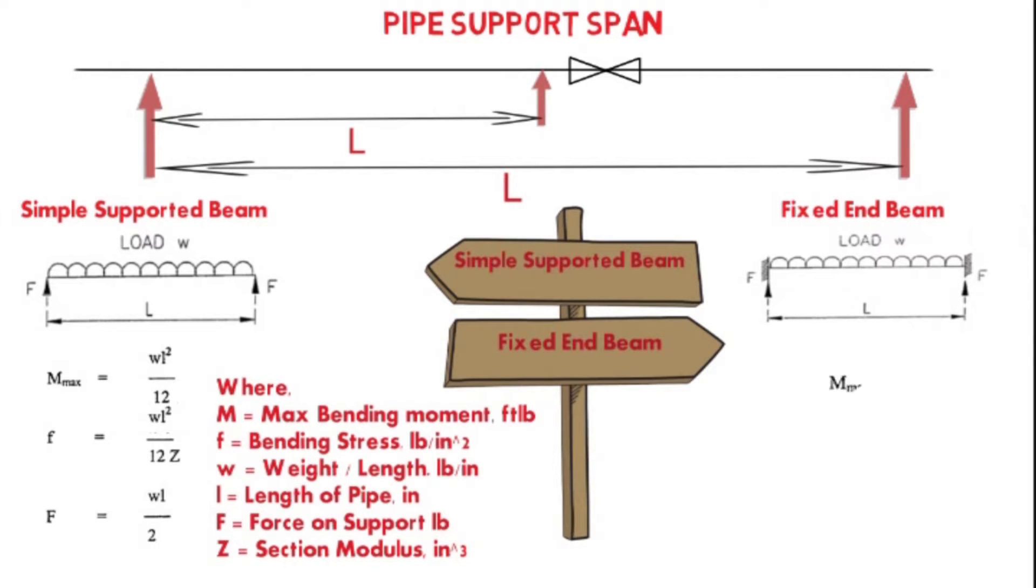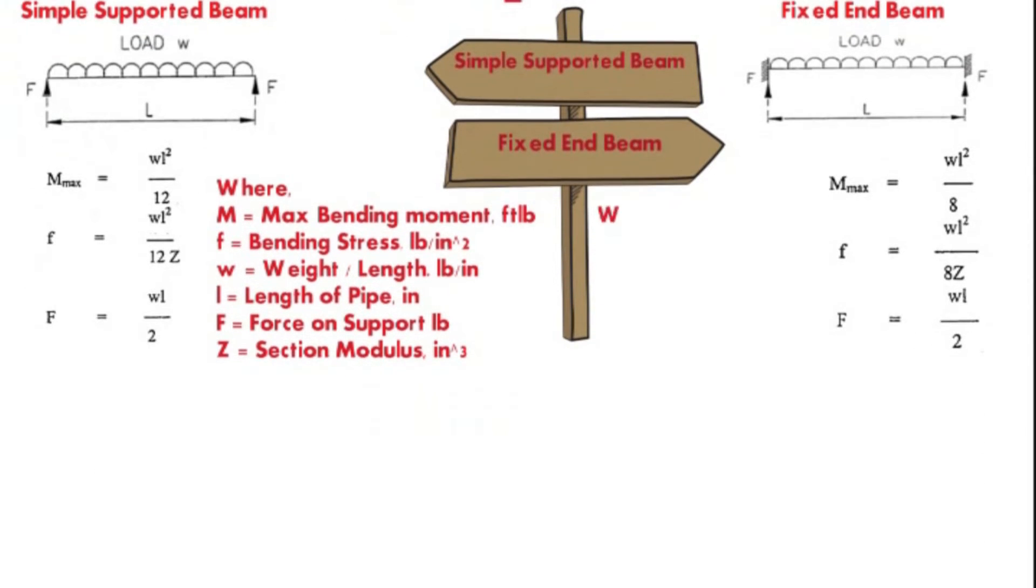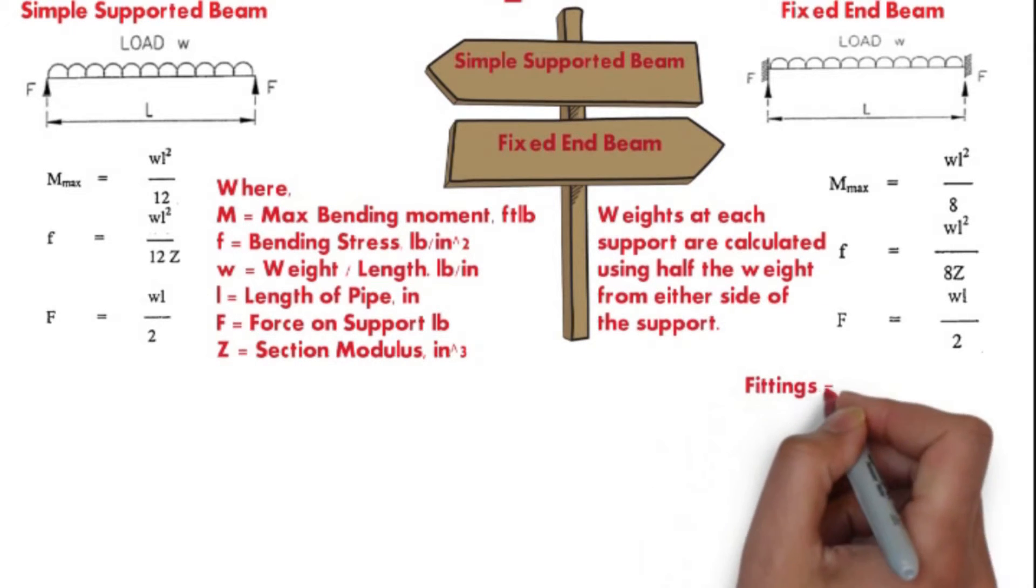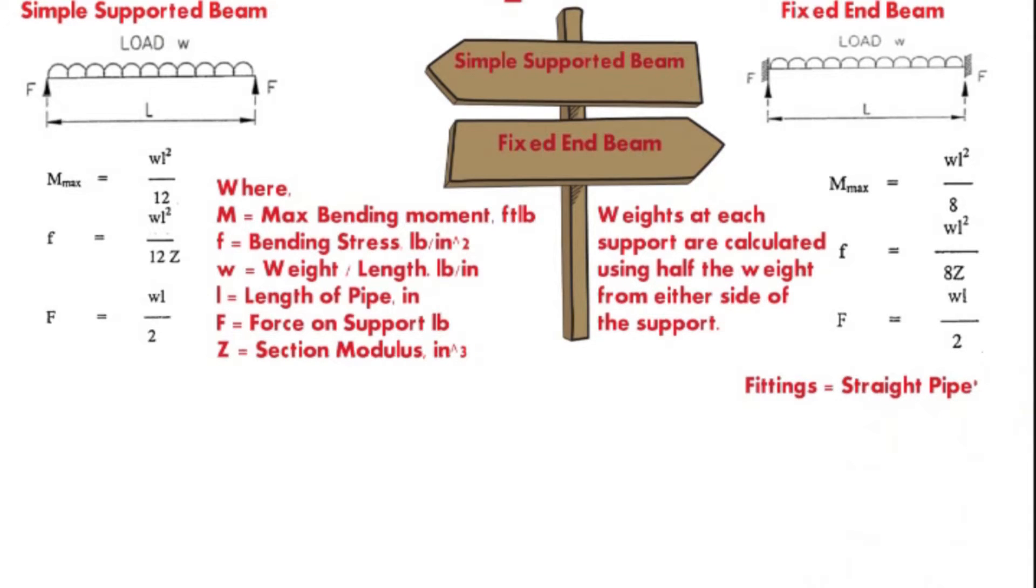Similarly, for the fixed end beam, formulas are like this. Weight at each support is calculated using half of the weight from either side of the support. Generally, fittings can be calculated as a straight pipe unless they are especially heavy.